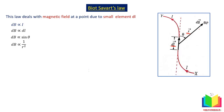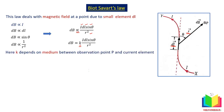As distance increases, the magnetic field decreases in terms of r squared — meaning if r doubles, the magnetic field decreases four times. When we remove the proportionality sign, we get a constant of proportionality k. This k depends on the medium between the observation point and the current element, just as in Coulomb's law k also depends on the medium.